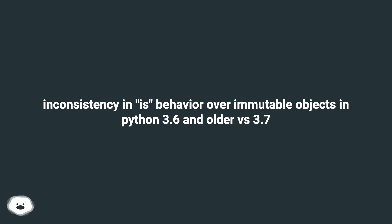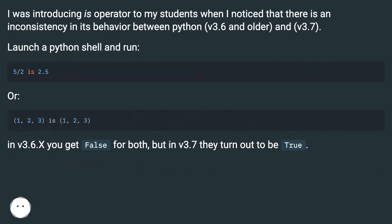Inconsistency in 'is' behavior over immutable objects in Python 3.6 and older versus 3.7. I was introducing the 'is' operator to my students when I noticed that there is an inconsistency in its behavior between Python v3.6 and older, and v3.7.